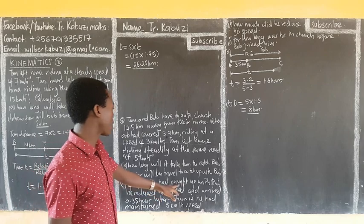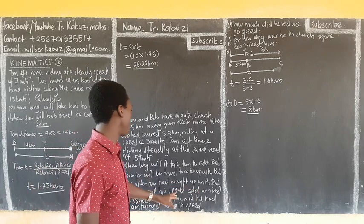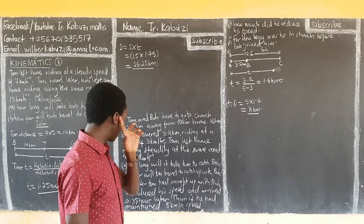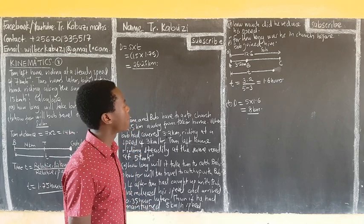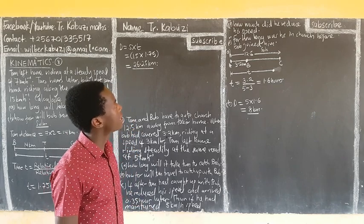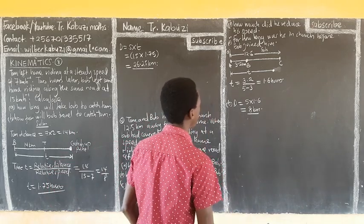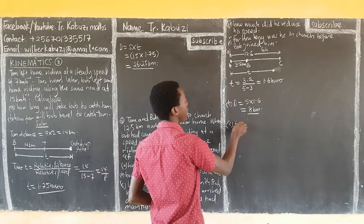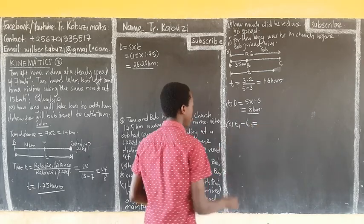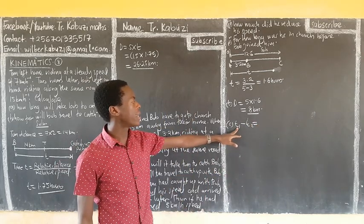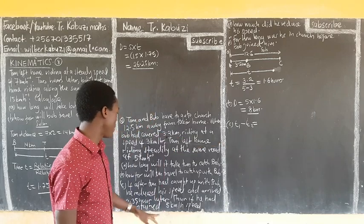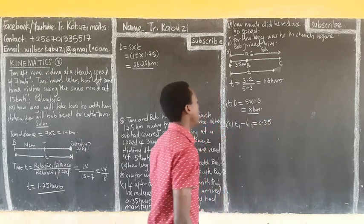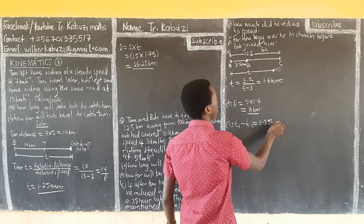Part C: after Tom had caught up with Bob, he reduced his speed and arrived 0.35 hours later than if he had maintained the speed of 5 km per hour. How much did he reduce the speed? The difference in time — between maintaining speed and reducing it — is going to be 0.35 hours.